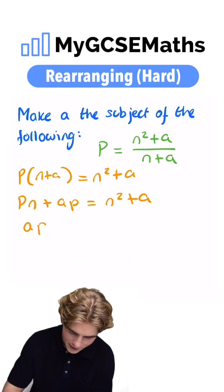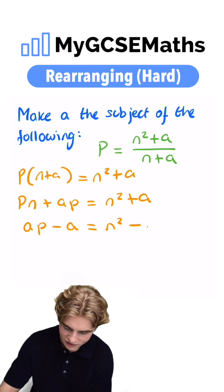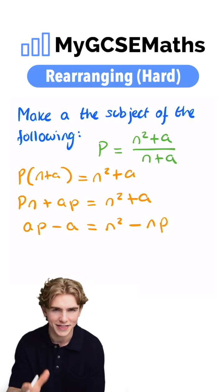We're going to get AP subtract A equals N squared minus NP. Pause the video now if you didn't get that and just check it out.